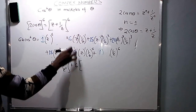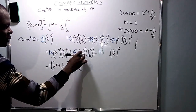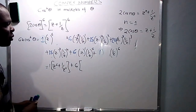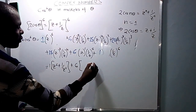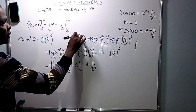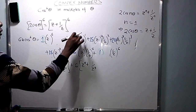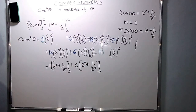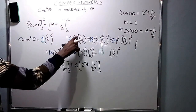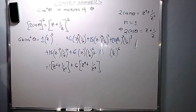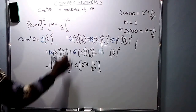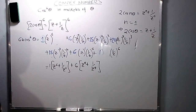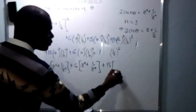For the terms with coefficient 6: z to power 5 times 1 over z gives z to power 4, and z to power 5 times 1 over z squared... wait — z times 1 over z to power 5 gives 1 over z to power 4, and z to power 5 times 1 over z gives z to power 4. So we have coefficient 6 times (z to power 4 plus 1 over z to power 4).